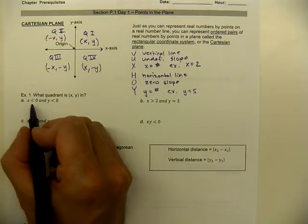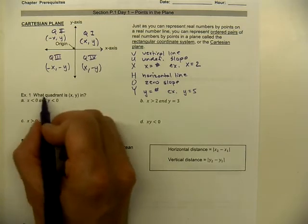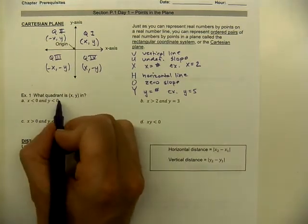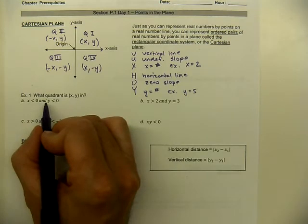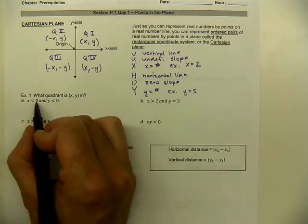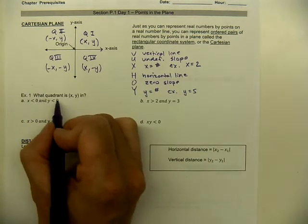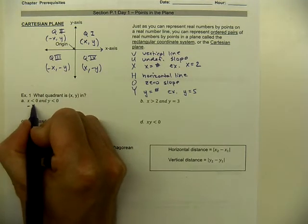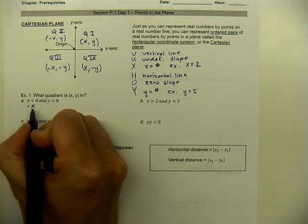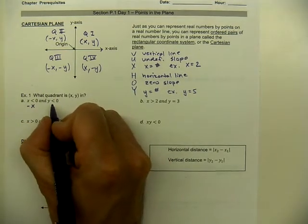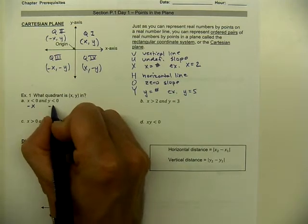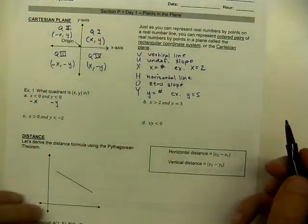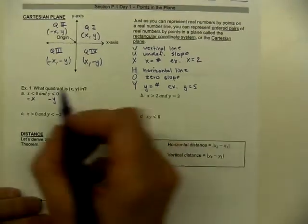Example one: what quadrant would we be in when we find an ordered pair where X is less than zero and Y is less than zero? Because we're comparing to zero, we can think of it as X is negative and Y is negative — so that puts us in quadrant three.